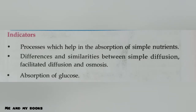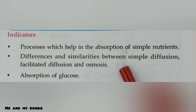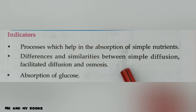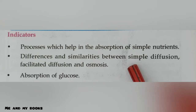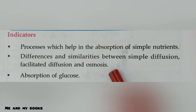The processes which help in absorption of simple nutrients are four: simple diffusion, osmosis, facilitated diffusion, and active transport. The similarities between simple diffusion, facilitated diffusion, and osmosis are that in all three, molecules move from a region of higher concentration to a region of lower concentration. The differences: simple diffusion does not need protein molecules, but facilitated diffusion does need protein molecules, and osmosis refers specifically to the movement of water molecules.